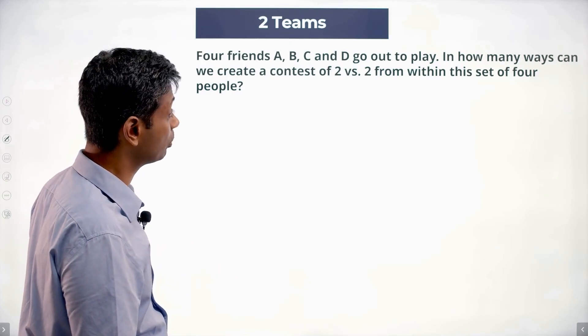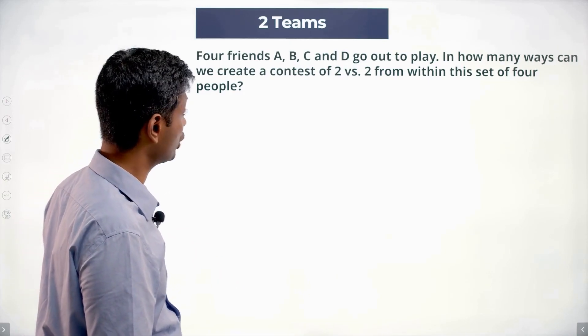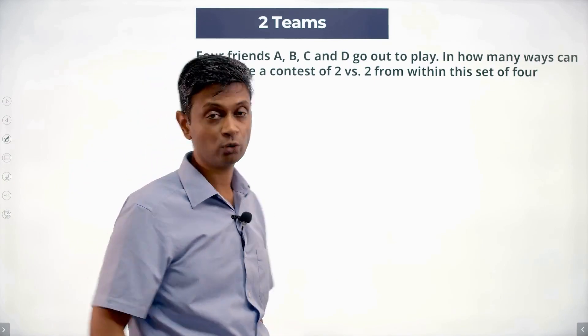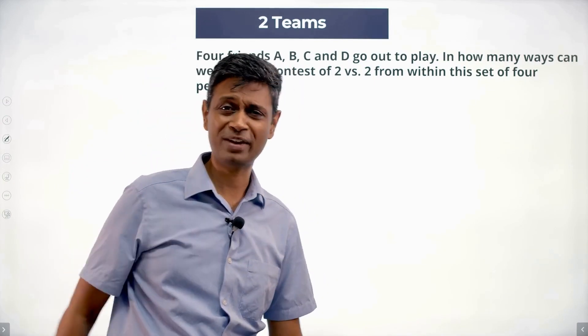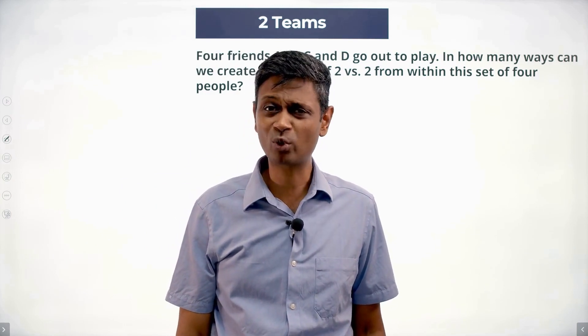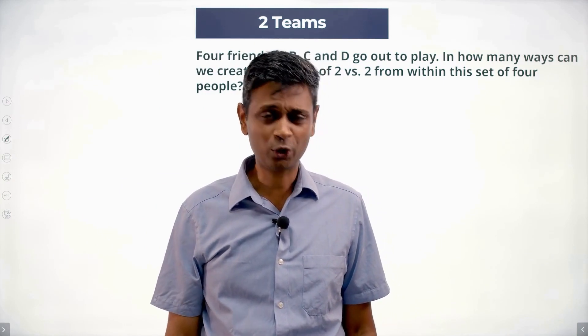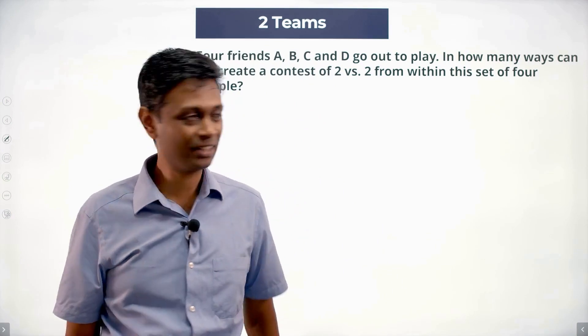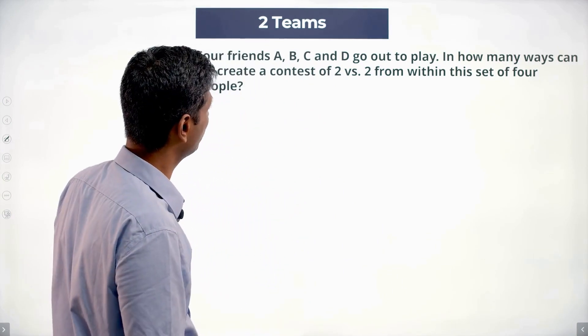Four friends A, B, C and D go out to play. In how many ways can we create a contest of two versus two from within this set of four people? Very nice question, one of my favorite questions. We had a tougher version of this and we said look, we should not make it so difficult, so we dialed it down. It turned out it probably became not that difficult. A, B, C, D go out to play.